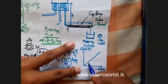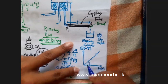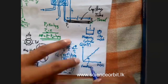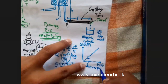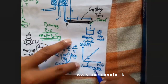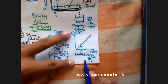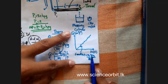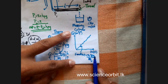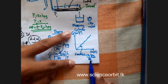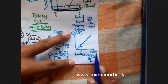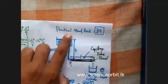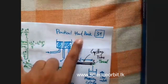When you take the gradient of the graph, the gradient equals pi R⁴ rho g over 8 eta. R we can find, rho is the density of the liquid which we know, g is 9.81, 8 is a constant, and eta is what we are supposed to find. So you make eta the subject and find eta. All these details are given in experiment number 39 of your physics practical handbook.